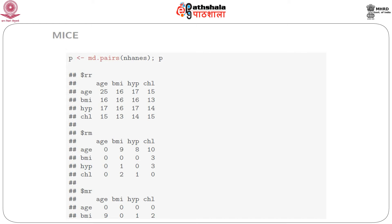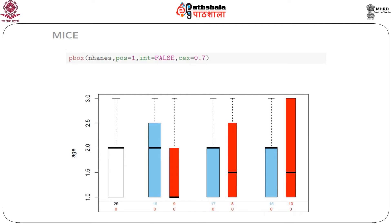The R package VIM contains functions for plotting incomplete data, and it is a good idea to use this package to visualize the missing data patterns. We can compare the distribution of one variable within subgroups defined by others using the pbox() function in VIM. If we call pbox(enhance, pos=1), we generate a plot that shows the distribution of age in the white box on the left-hand side, split three times into two groups corresponding to missing data in BMI, hypertension, and cholesterol respectively. In this case the distributions are quite similar.